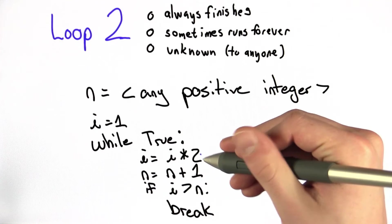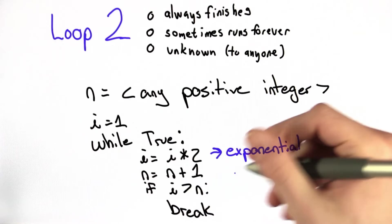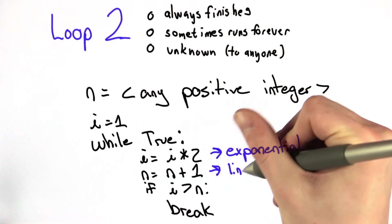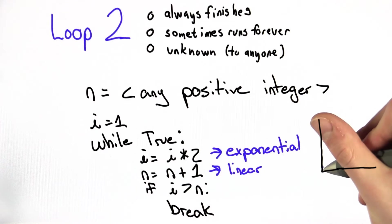One way to think about i is that it's an exponential function. Every iteration it doubles in size. n is linear. Every iteration increases by 1. So we know i starts at 1, but every time it doubles.